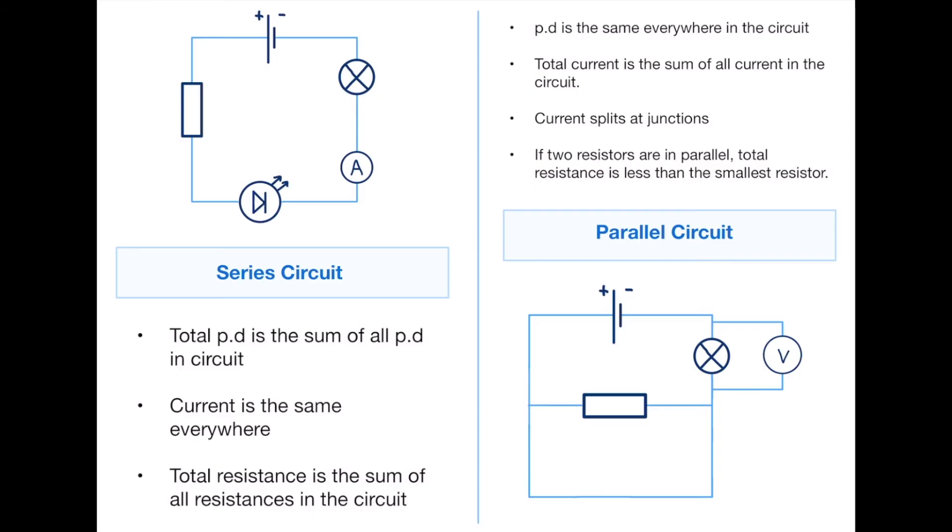The current is the same everywhere. That's because those electrons can only go one route around the circuit, so it's going to be the same everywhere. The total resistance is the sum of all resistances in the circuit. Again, that makes sense because all those electrons have to go through the same route. So if there's a blockage somewhere, they're all going to be affected and it's going to affect the entire circuit.